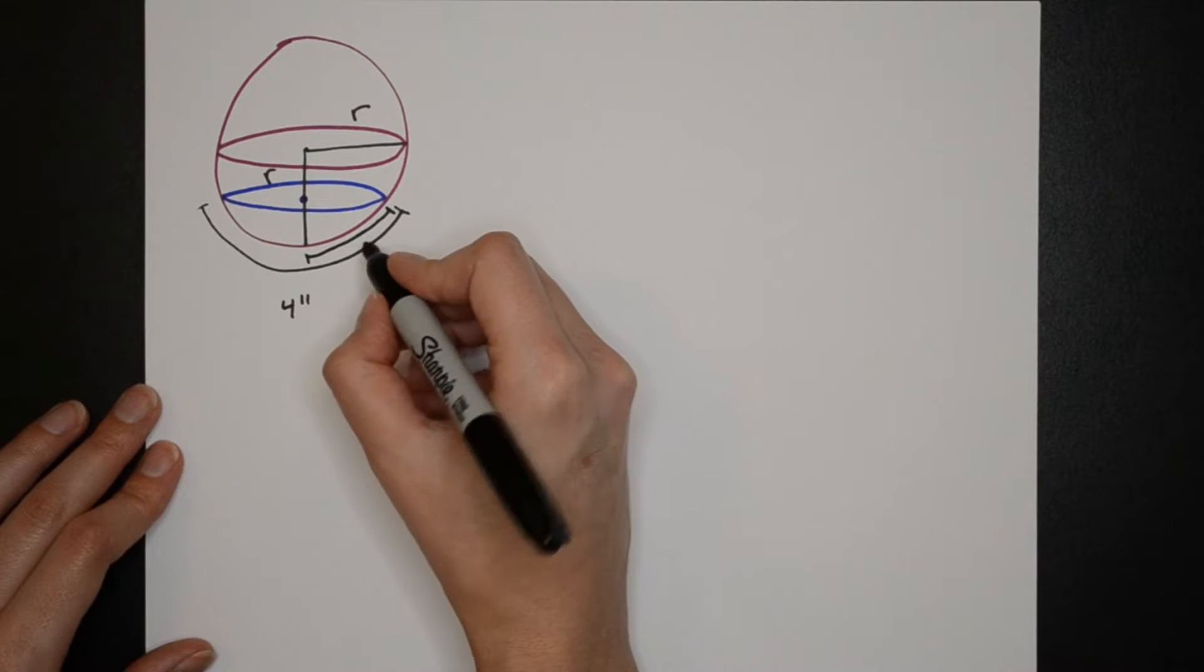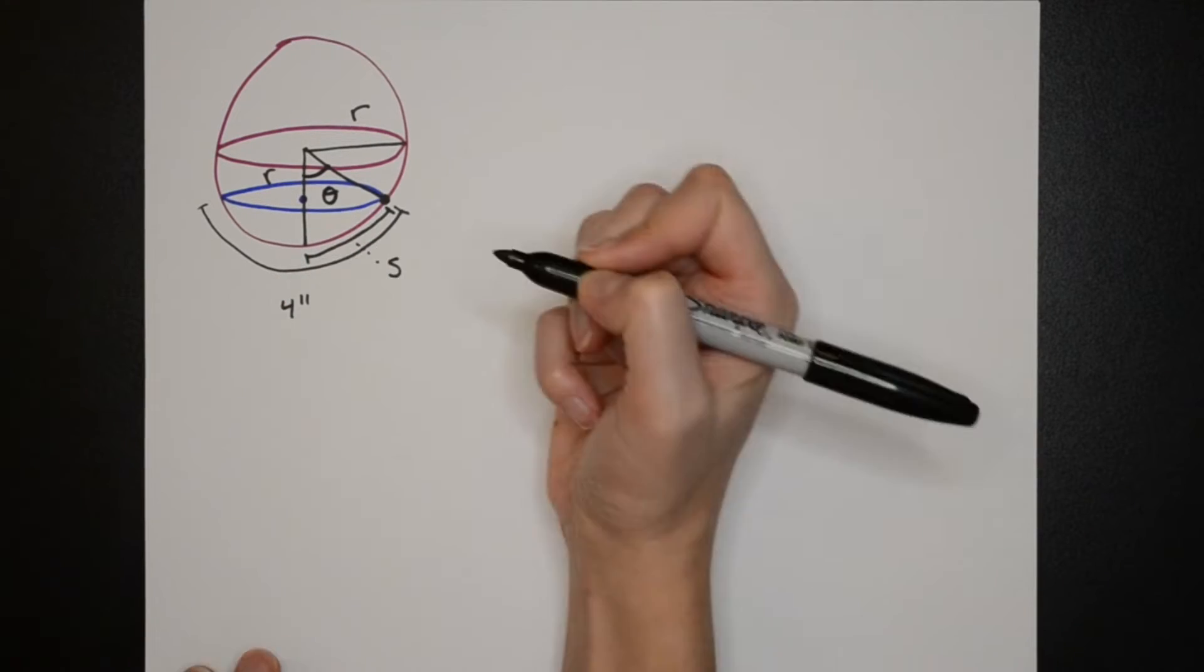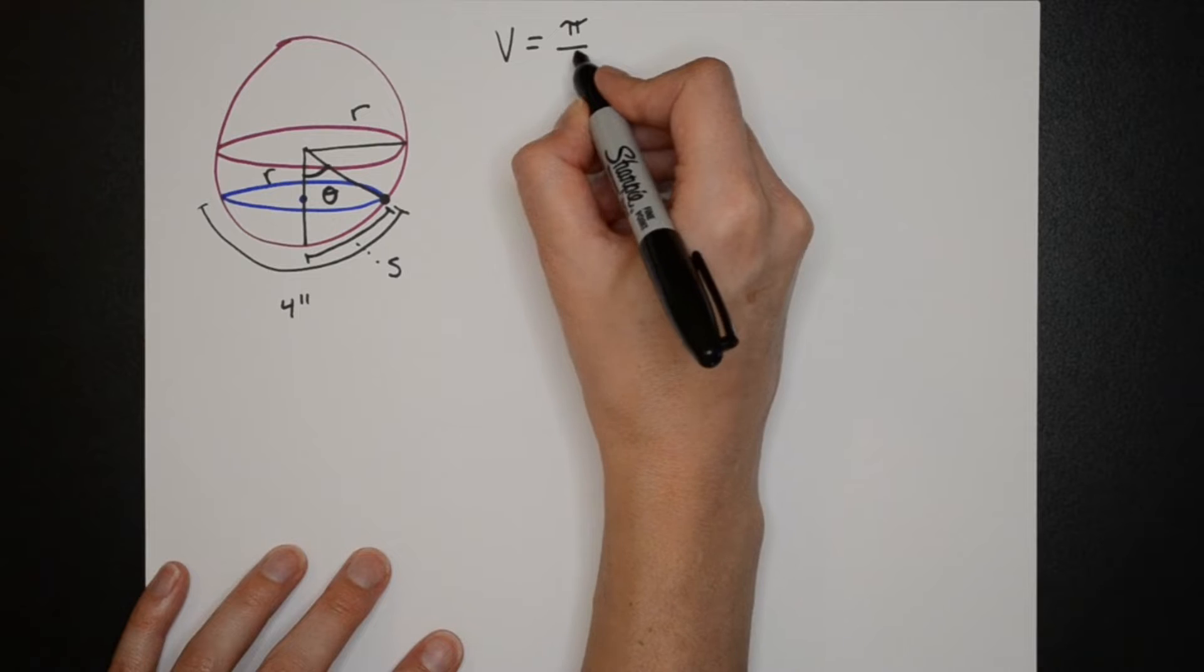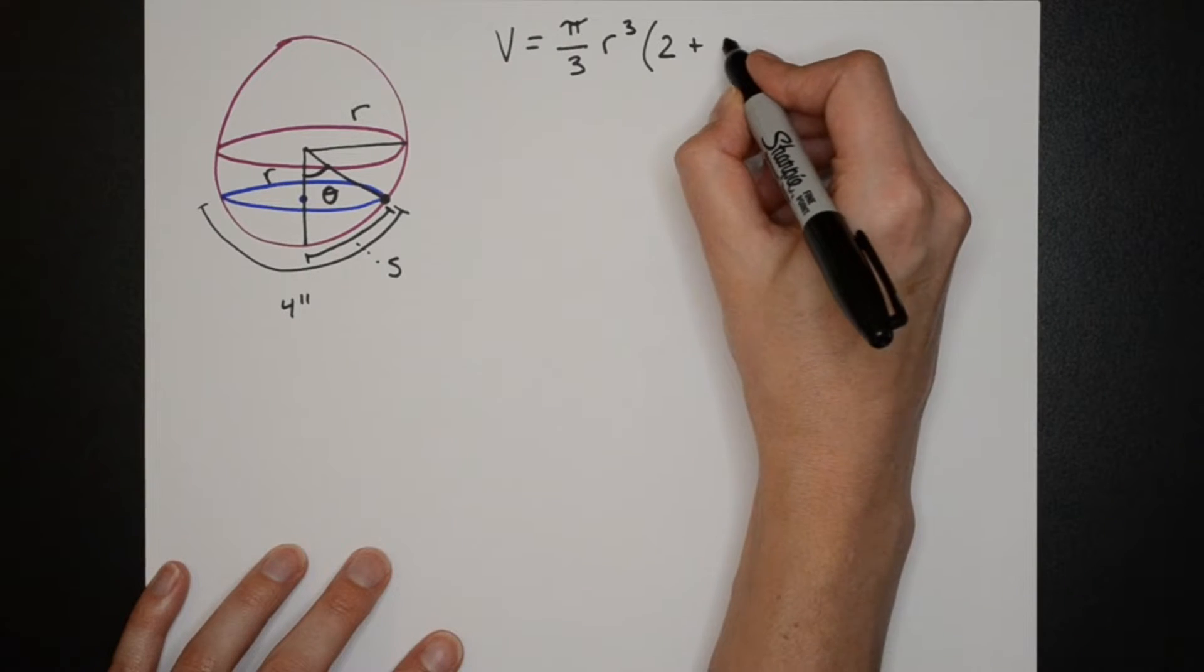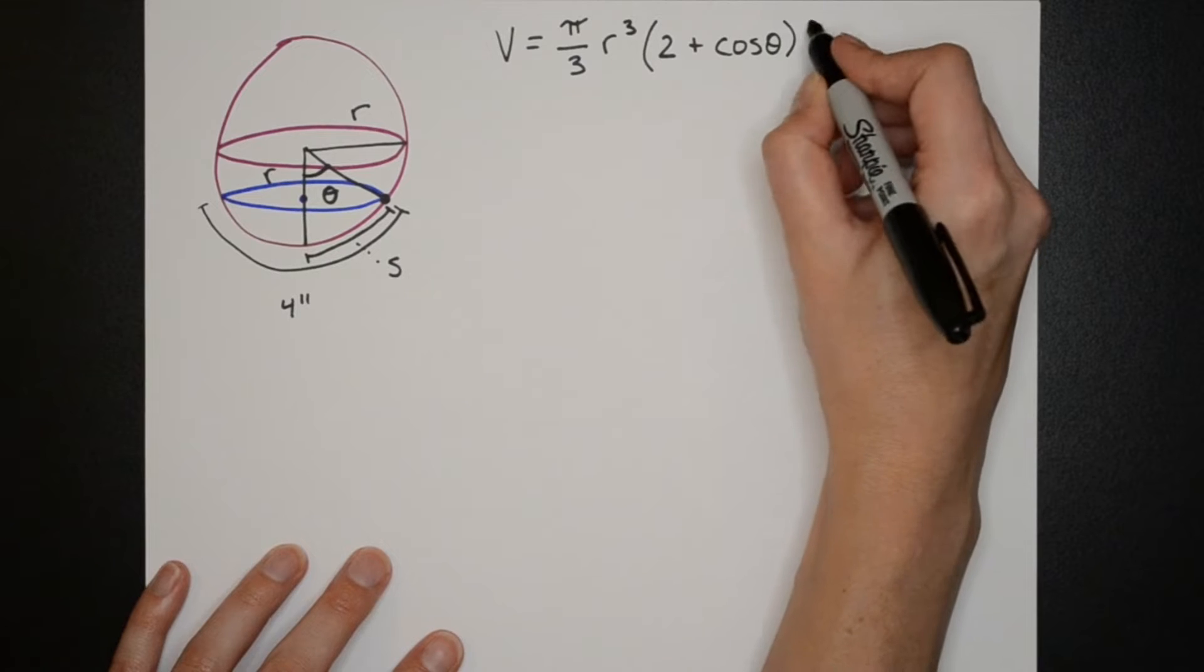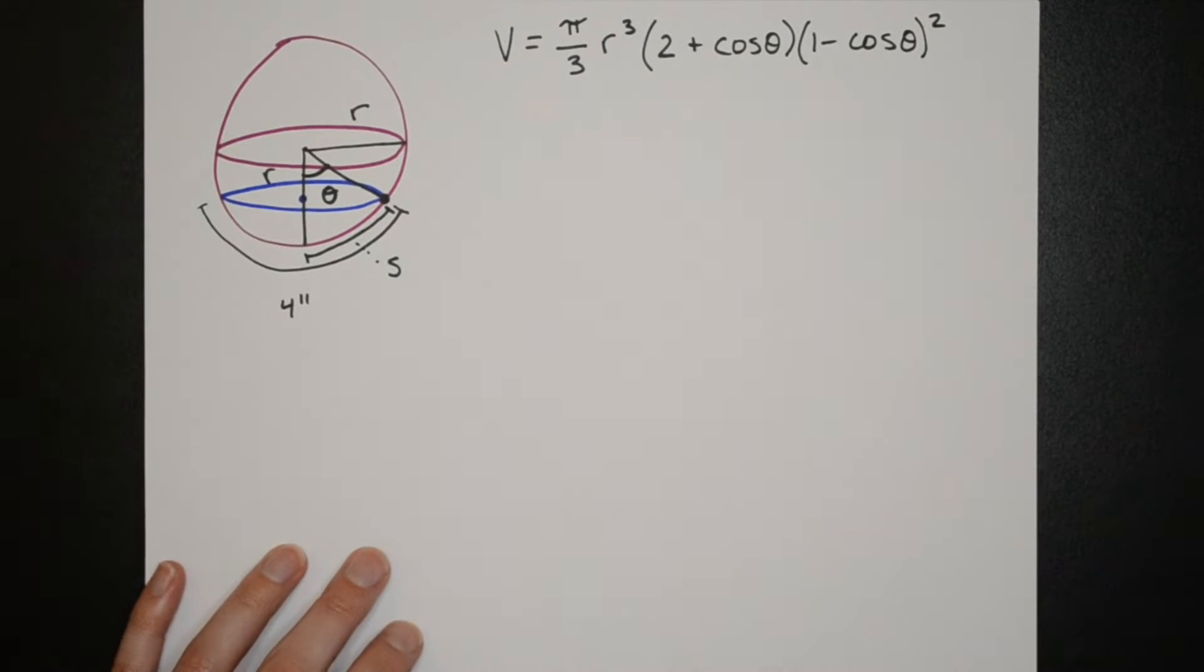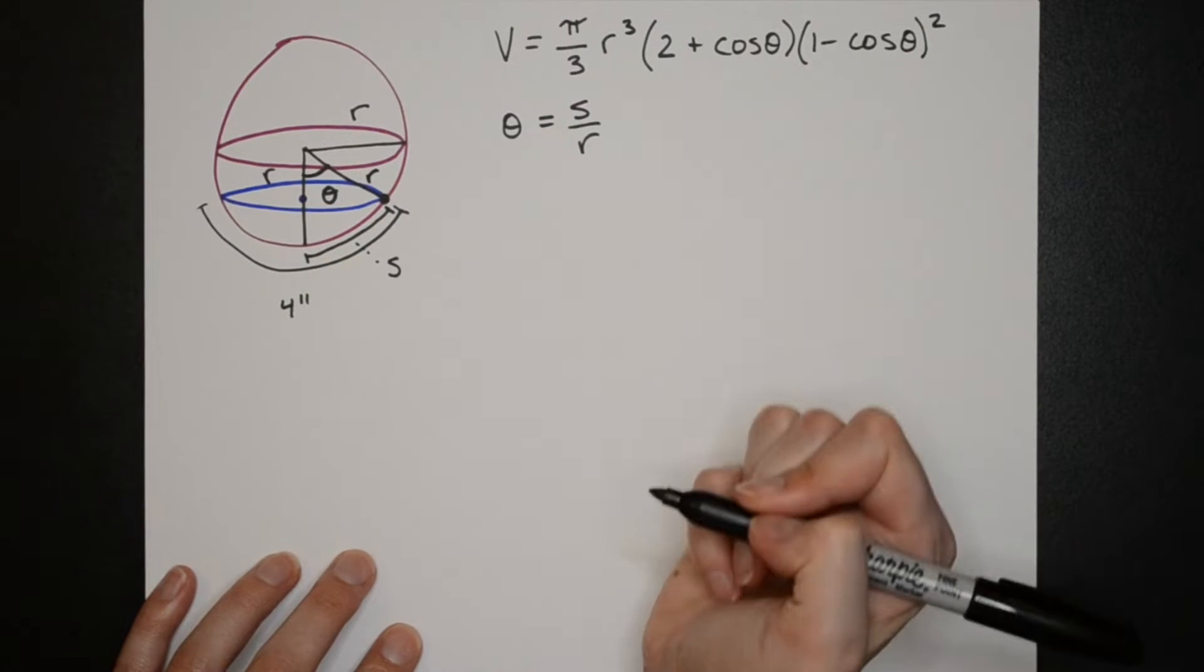Now I'm going to define arc length which will be represented by s as well as theta. The volume of a spherical cap is defined as pi over three times r cubed times two plus cosine theta times one minus cosine theta quantity squared. Then we can define theta as arc length divided by the radius.